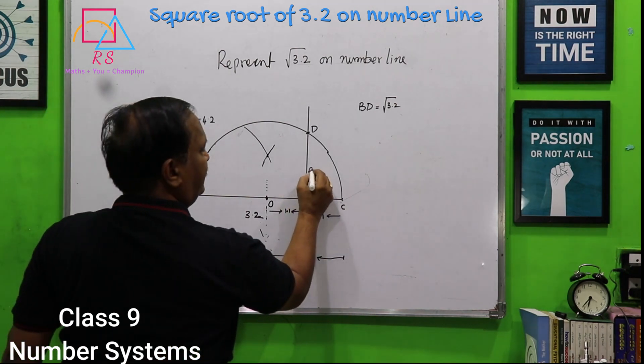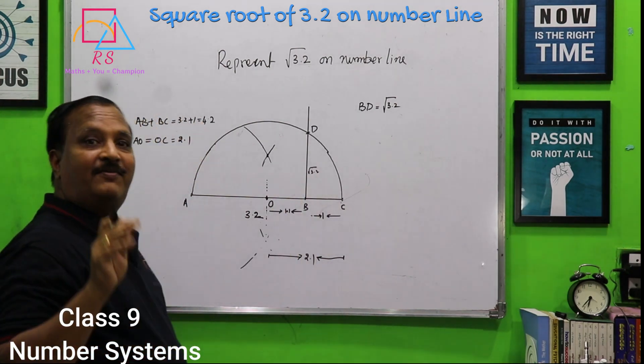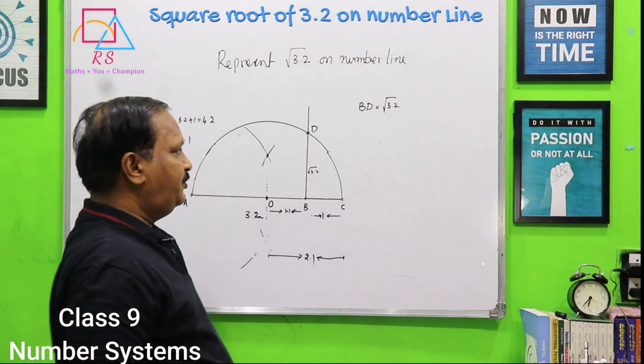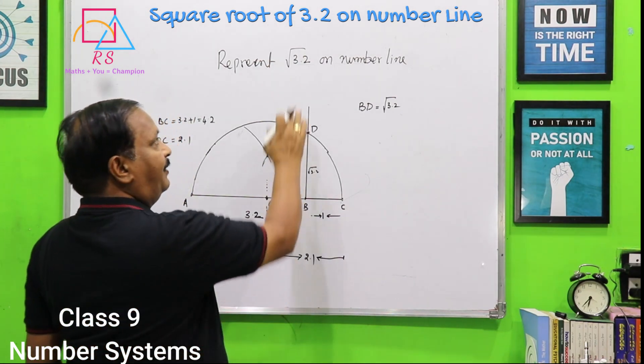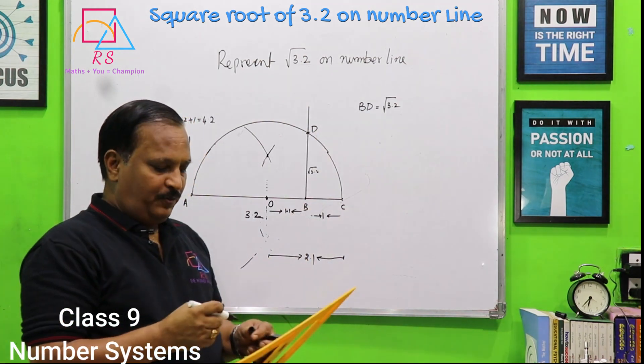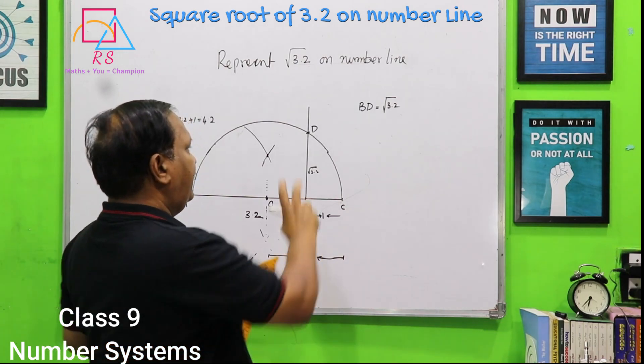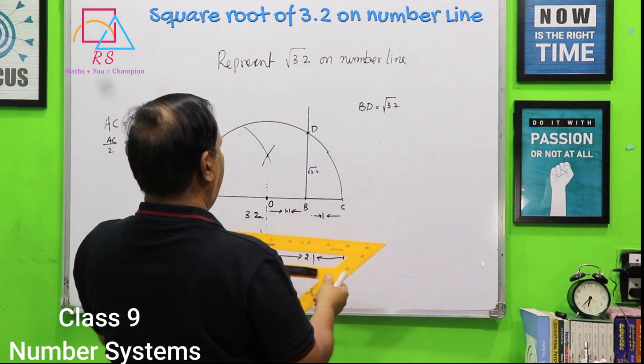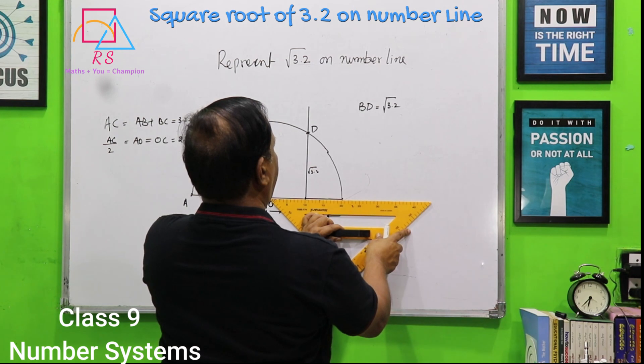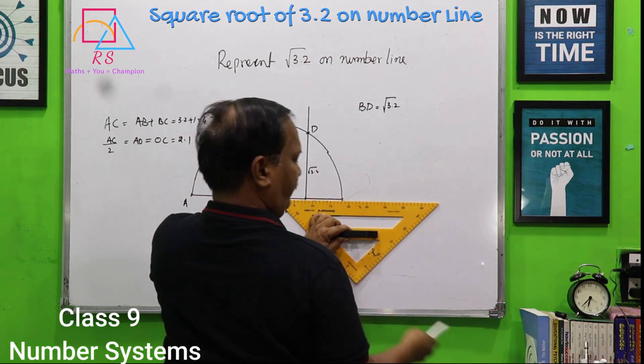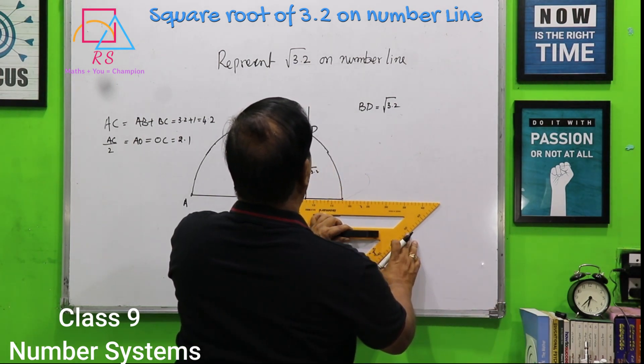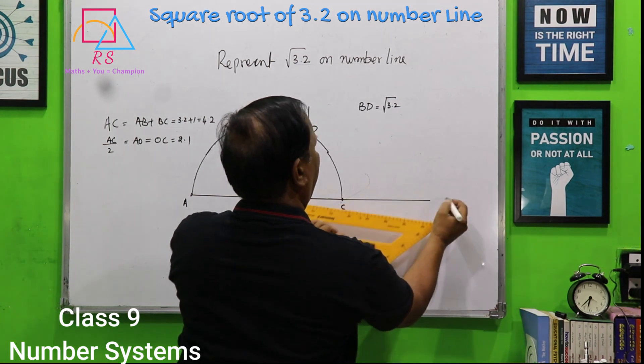And this BD is equal to root 3.2. So, this is nothing but root 3.2. How? For how, I am going to tell you. We extend the line.